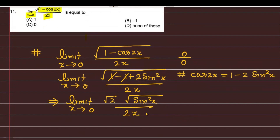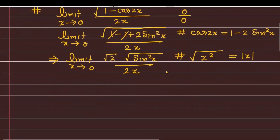अब देखें, यह जो step है — यहाँ पर आपको careful होना है। अगर आप जल्दबाजी करेंगे तो mistake हो सकती है। जो next concept required है वो यह है: अगर आप किसी भी number का square root लेते हैं, तो यह basically equal to mod of x होता है। आपको यहाँ पर mod लगाना पड़ेगा — अगर आप without mod के काम करेंगे तो mistake हो जाएगी।